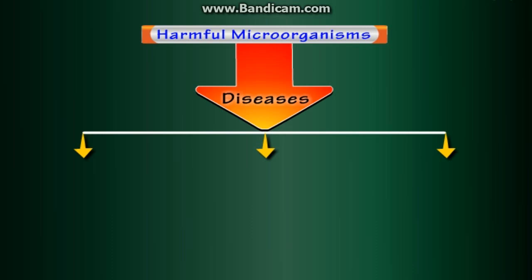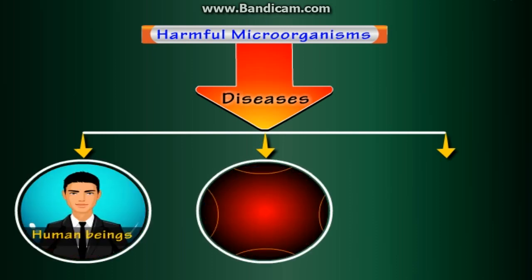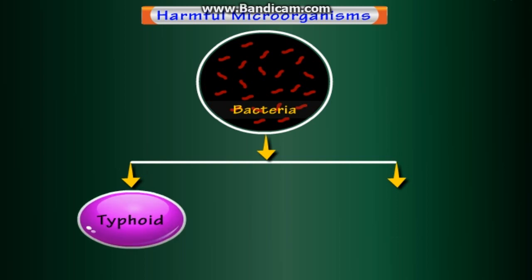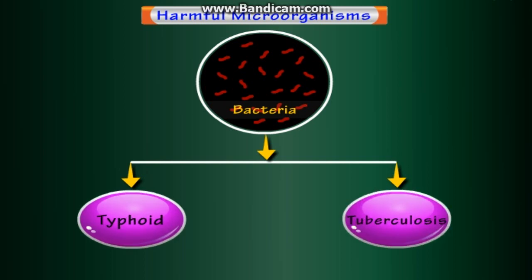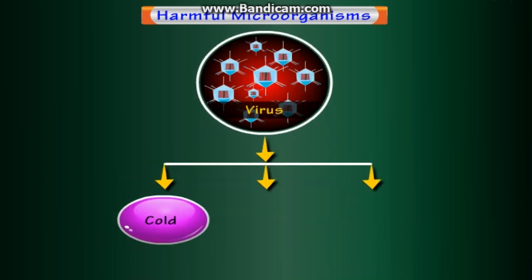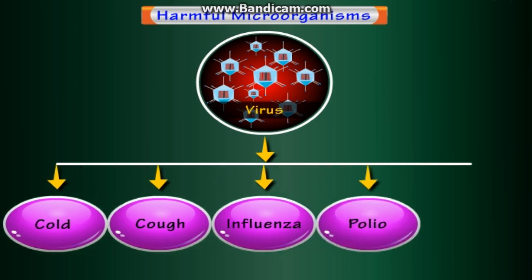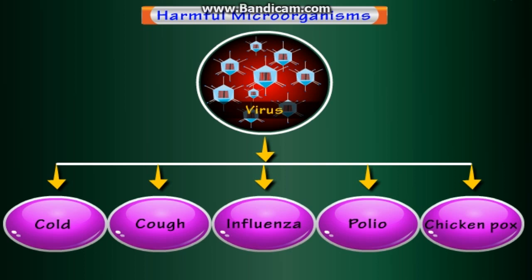Harmful microorganisms are harmful in many ways. Some of them cause diseases in human beings, plants, and animals. Diseases such as dysentery and malaria are caused by protozoa. Typhoid and tuberculosis are bacterial diseases. Common ailments like cold, cough, influenza, etc. are caused by viruses. Also, some serious diseases such as polio and chicken pox are caused by viruses.